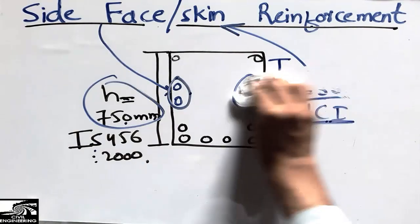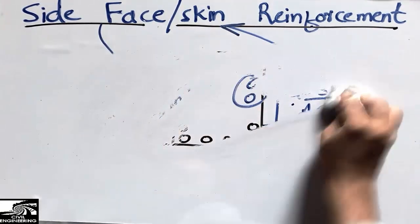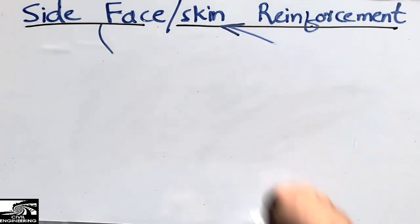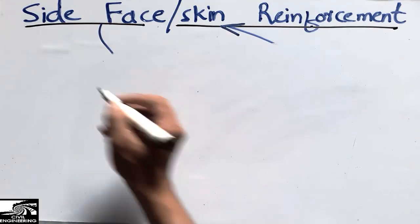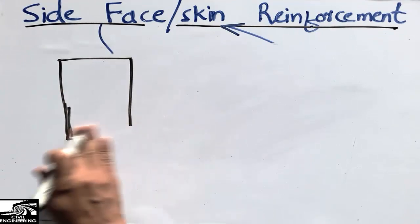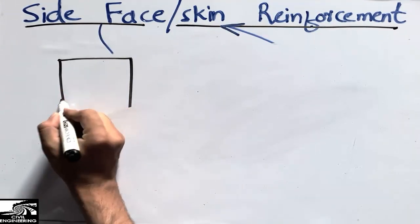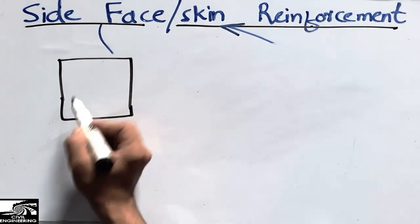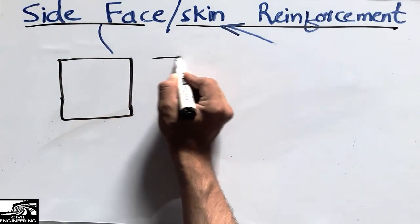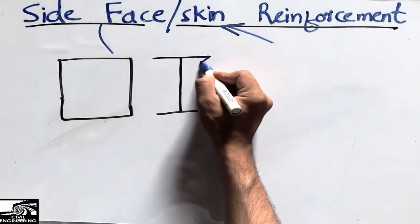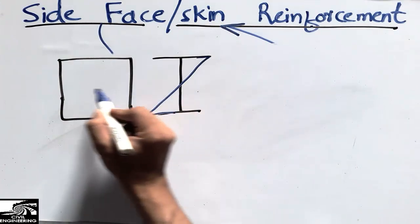We use this reinforcement due to the tensile strain diagram. Consider a shallow-type beam — not a deep beam. These are used when the beam is a deep beam. For a shallow beam, the internal strain diagram looks like this: there is a neutral axis in the middle.